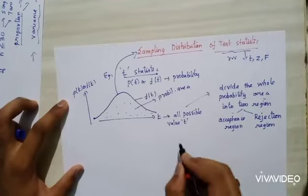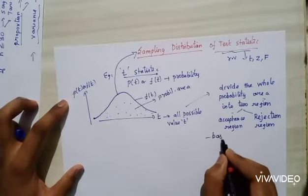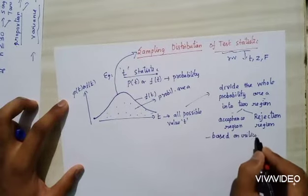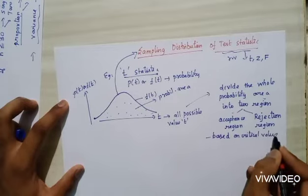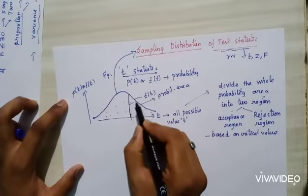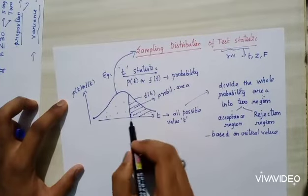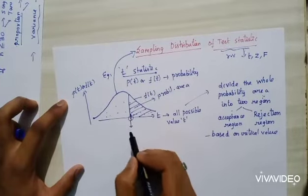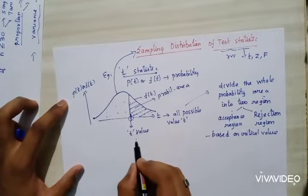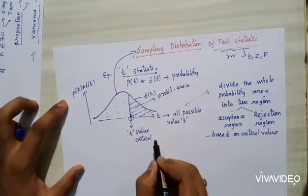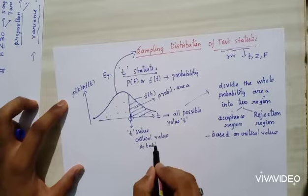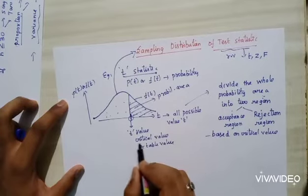I will divide based on critical value. For example, I am dividing like this — this value is called the critical value, also known as the table value.